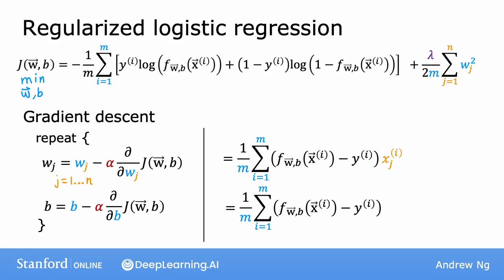And just like regularized linear regression, when you compute what are these derivative terms, the only thing that changes now is that the derivative with respect to wj gets this additional term, lambda over m times wj added here at the end. And again, it looks a lot like the update for regularized linear regression.